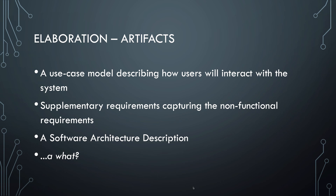The elaboration phase also results in artifacts. You need to produce a use case model that describes in more detail how users will interact with the system. You may need to describe extra non-functional requirements — for example, you want the assignment submission system to work flawlessly even if tens of thousands of students are using it at the same time, or you want to ensure that the system is online 99% of the time. Finally, the architecture of the software should be well defined at this point.